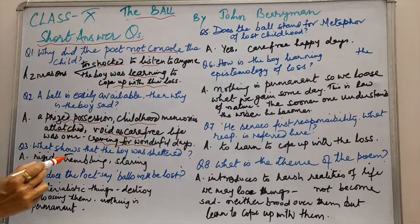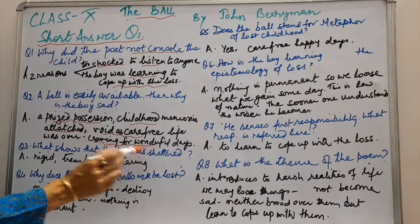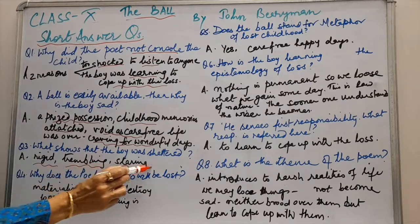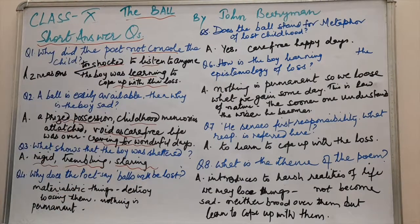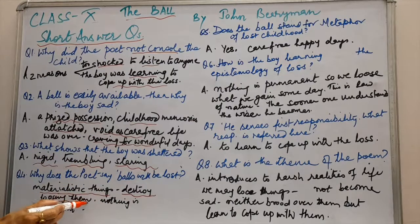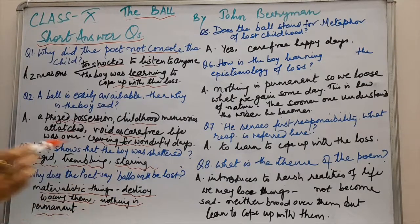Question number three: what shows that the boy was shattered? He was standing rigid, trembling, and staring at the ball. Question number four: why does the poet say 'balls will be lost'? Balls here represent materialistic things, and materialistic things get destroyed — we keep losing them because nothing is permanent in this world. That is why the poet says balls will be lost.